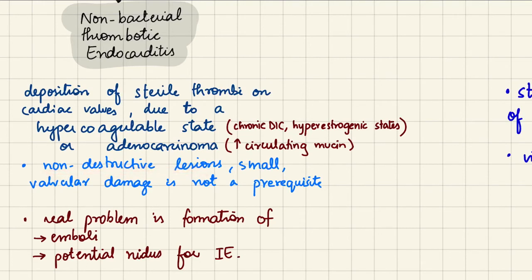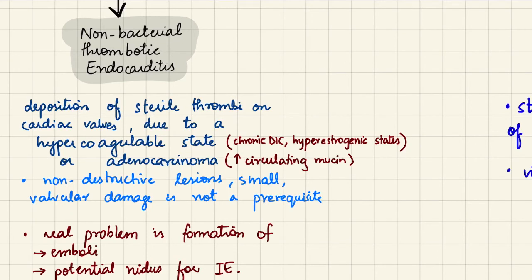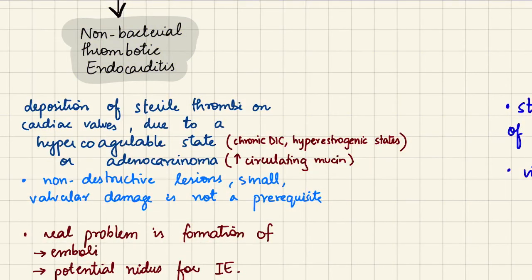These lesions are not destructive compared to vegetations caused by microbial agents — they are small, and valvular damage is not a prerequisite for their formation. The real problem is embolization, since these vegetations are thrombi and can embolize. They can also serve as a potential nidus for infective endocarditis, as circulating bacteria can find the lesion and proliferate there, converting non-bacterial endocarditis into infective endocarditis.